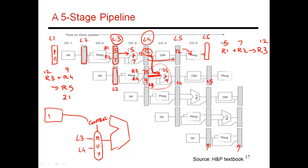A control signal decides which input the ALU takes. This signal comes from the decode stage, which is the smarts of the pipeline — where I analyze the sequence of instructions and figure out who is the producer and who is the consumer. The decode stage figures out that reading from the register file gives an old value of R3, but getting the value from L4 gives the correct value produced by the previous instruction. So it sends a signal to pick the L4 input: feed 12, not 75, into the ALU.